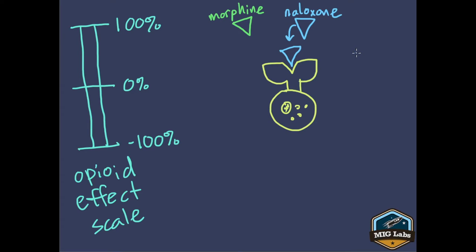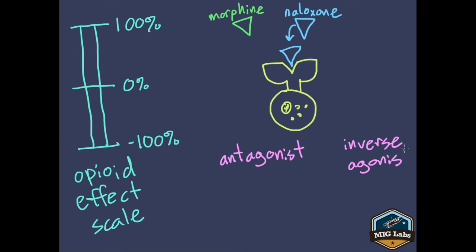Here's an important point that a lot of people don't know: we have antagonists and we have what are called inverse agonists. They sound like two ways of saying the same thing, but they are not equal — an antagonist is not an inverse agonist. To explain the difference, let me come back to the scale we drew earlier.